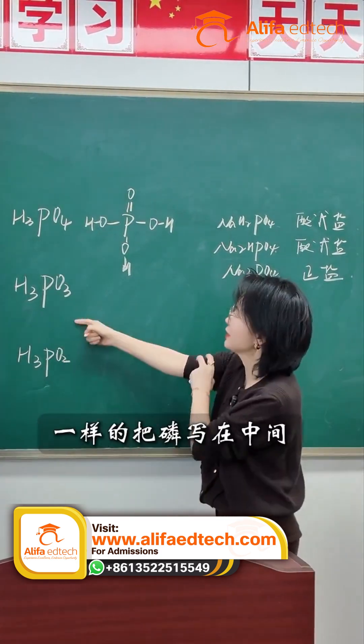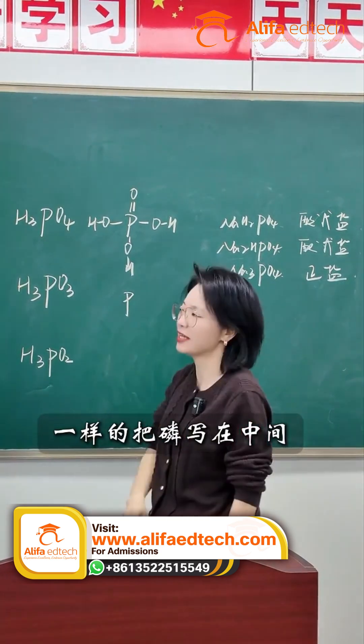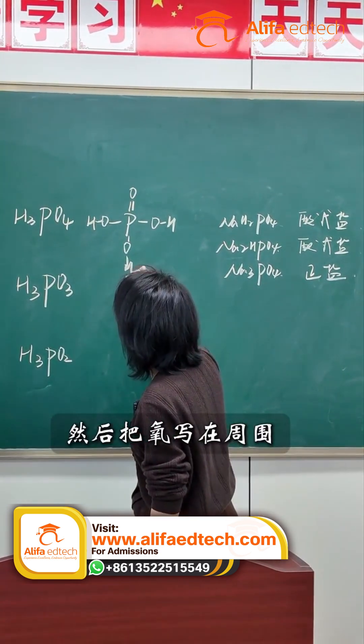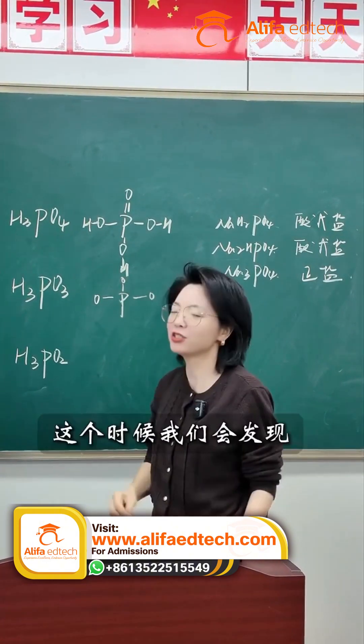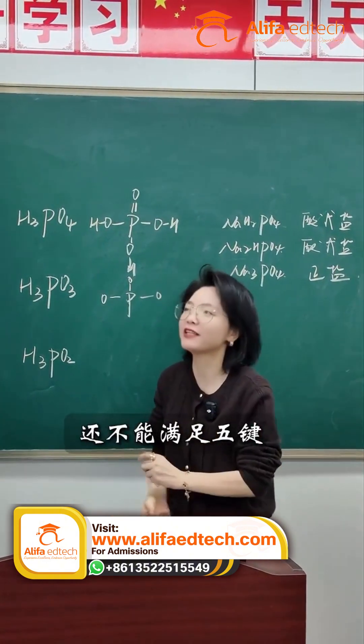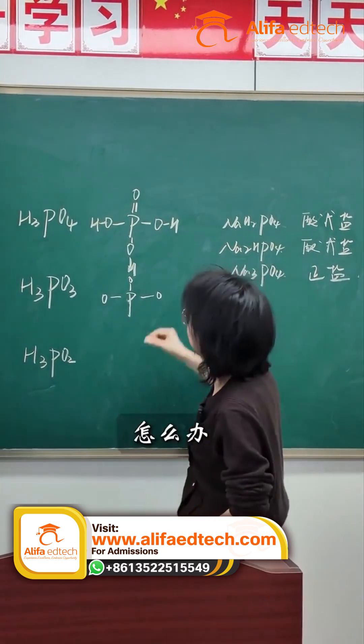Next, let's look closely. Same thing. Write the phosphorus in the middle, then write the oxygens around it. There are three oxygens in total. At this point, we'll find it still doesn't satisfy the five bond requirement.